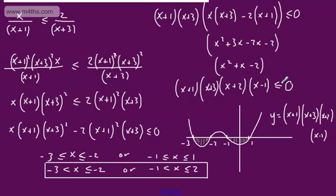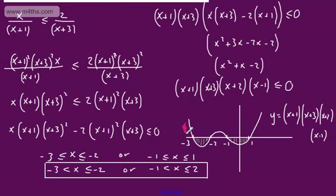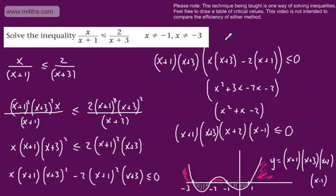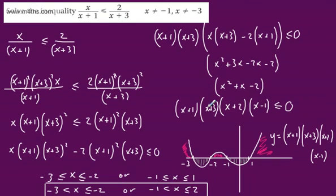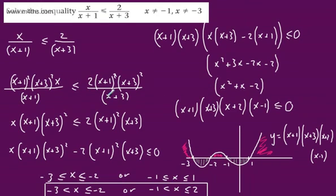Our critical values were minus 3, minus 2, minus 1, and 1. However, since x cannot equal minus 3 and x cannot equal minus 1, we need strict inequalities at those points. So the solution is minus 3 strictly less than x, less than or equal to minus 2, or minus 1 strictly less than x, less than or equal to 1. Those are the regions that satisfy the inequality. We're just looking at one possible way in which you can solve these inequalities.